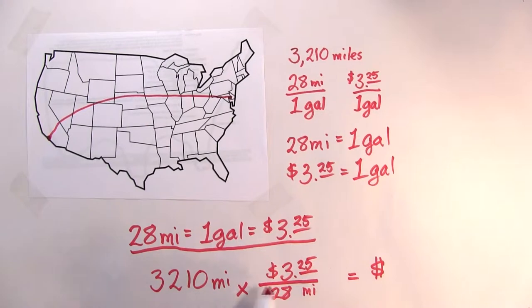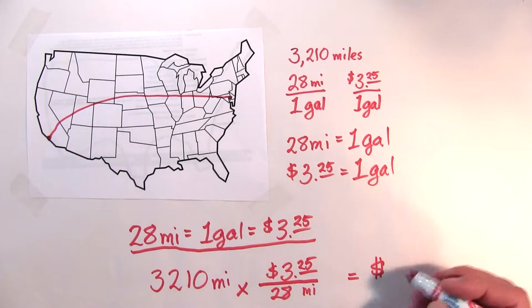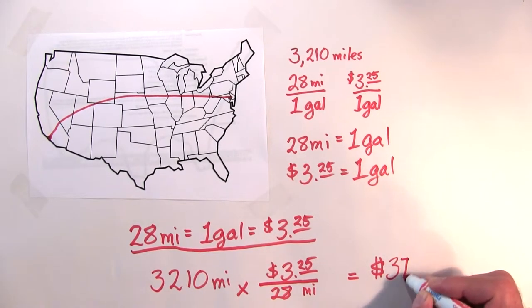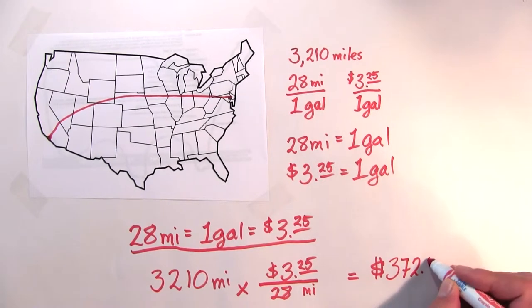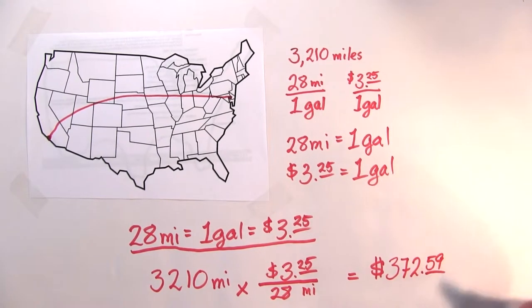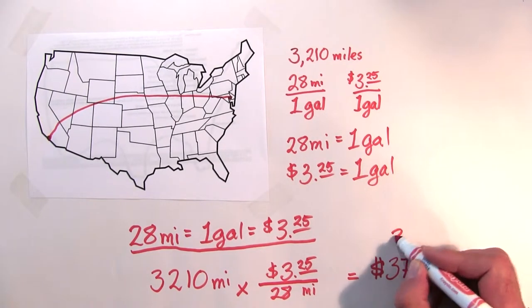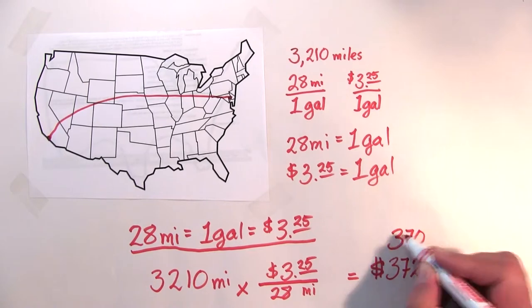I need to have three dollars and 25 cents on the top, so now to do the math, I would take 3,210 times $3.25 divided by 28, and I will get, I need a calculator, $372.59. Now if we round that off according to significant figures, we would probably just call that about $370.